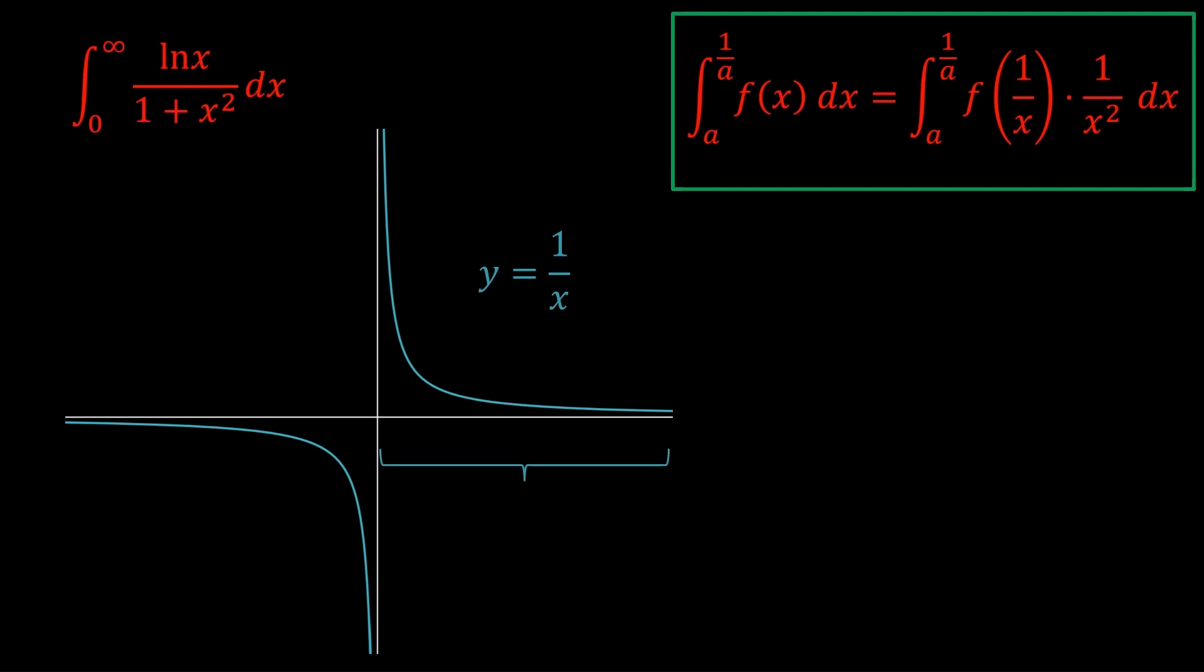Okay, so if you look at the graph of 1/x, well, what is 1/∞? Well, that's clearly approaching 0. But it's approaching 0 from above, so it's technically 0⁺. And what is 1/0?